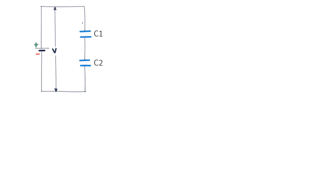The upper plate of capacitor C1 will start losing electrons, since this plate is connected to the positive terminal of the battery, which tends to pull electrons in its direction. The plate therefore ends up acquiring a certain positive charge, say Q. This positive charge Q will build up its own electric force between the plates and pull electrons onto the second plate due to the force of attraction, until the lower plate accumulates a similar charge Q, but negative this time.